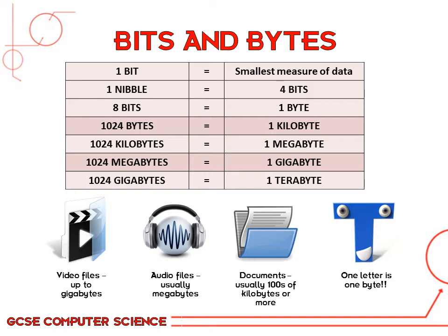After the bytes there's a big jump up to a kilobyte, which is equivalent to 1024 bytes. Next it's a megabyte which is 1024 kilobytes, then a gigabyte which is 1024 megabytes. The way technology is advancing all the time, it's quite common now to have hard drives with terabytes of storage — this would be 1024 gigabytes.